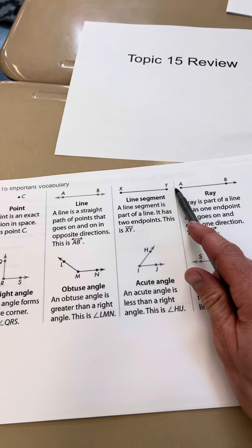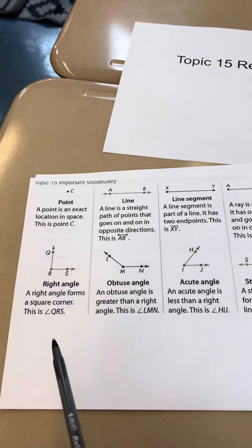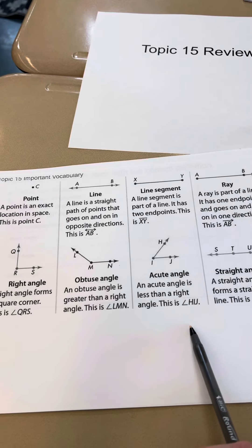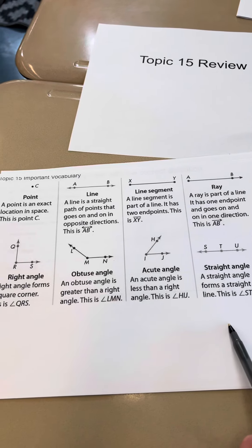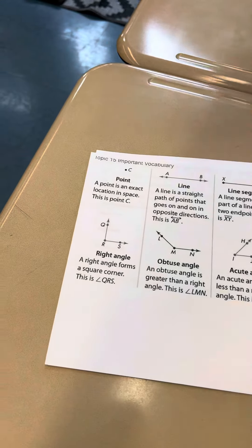They don't go on in this direction and then they go on forever here. Right angles are 90 degrees, obtuse are 180, acute are less than 90, straight angles are 180 exactly. Very important to know some other stuff that we talked about.